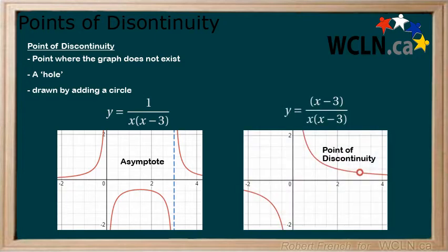Now let's add a factor of x minus 3 in the numerator. Now the graph of the function has a point of discontinuity at x equals 3 and not an asymptote. Let's look at this a little closer.